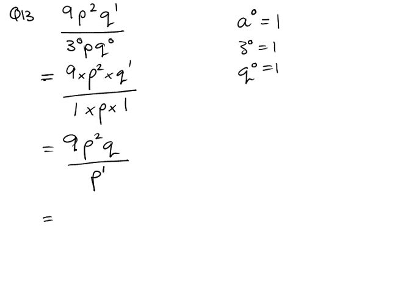So to simplify this, the only thing I can cancel out in this fraction is the p's. So 2 take away 1 is 1, so that p cancels out with one of those p's.